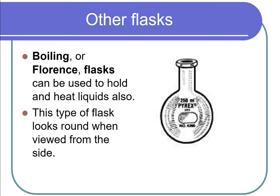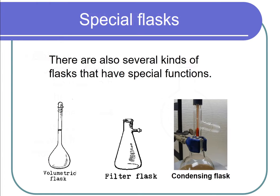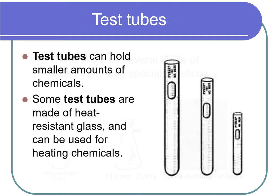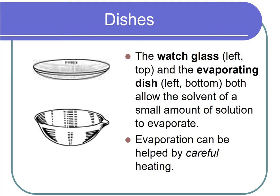There are also several kinds of flasks that have special functions. Test tubes can hold smaller amounts of chemicals; some test tubes are made of heat-resistant glass and can be used for heating chemicals. The watch glass and the evaporating dish both allow the solvent of a small amount of solution to evaporate.